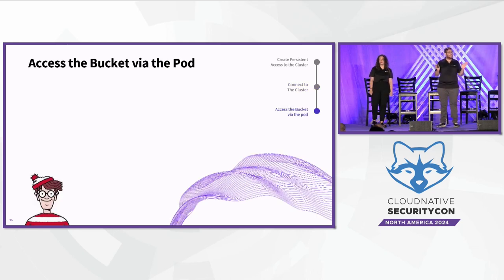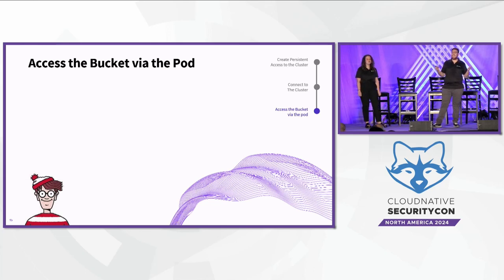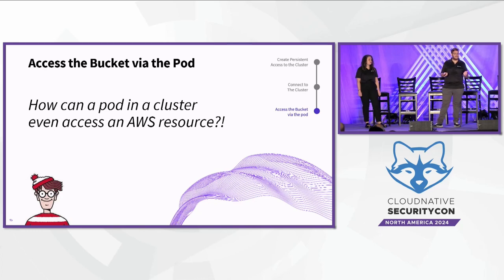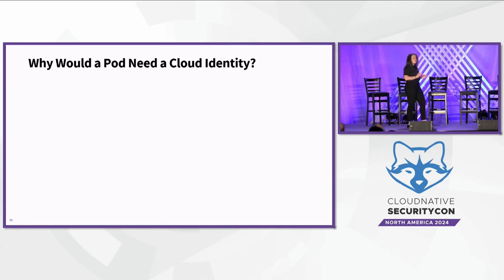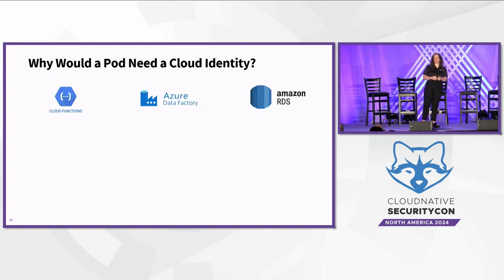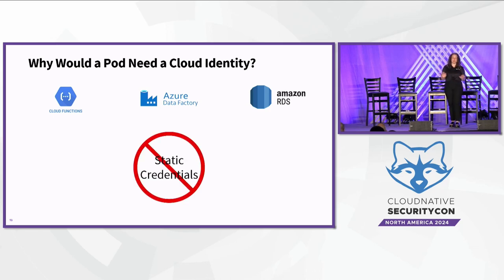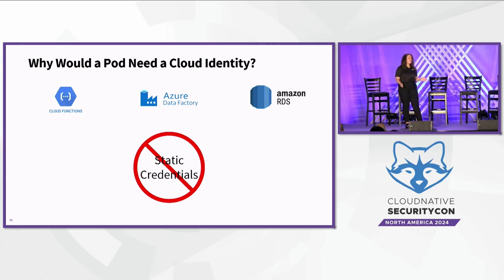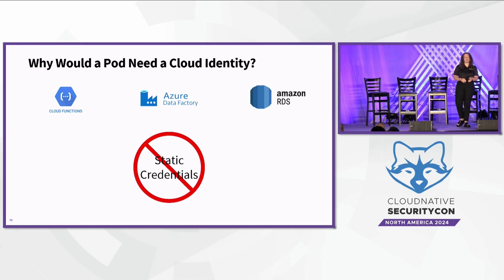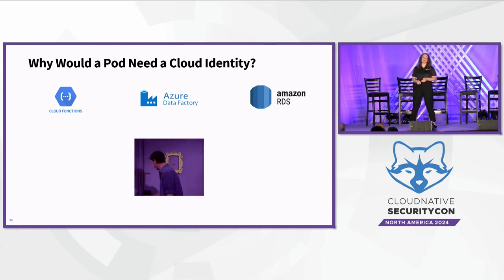Our threat actor created persistent access, connected to our cluster from an external account, and can now access the sensitive bucket via the relevant pod. But how can a pod in a cluster even access an AWS resource? When a pod needs to access a third-party service on the cloud provider side — such as Azure Data Factory, Google Functions, or Amazon RDS — authentication is required. Static, also called permanent credentials, are not a secure way of authenticating due to their lack of expiration. Managed Kubernetes services offer API-based authentication with temporary credential use. If you're still using static credentials, now is the time to make the switch.